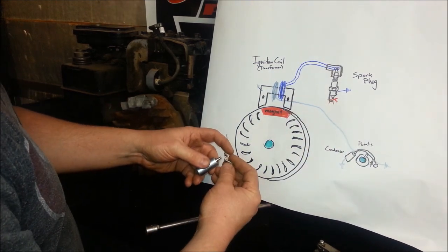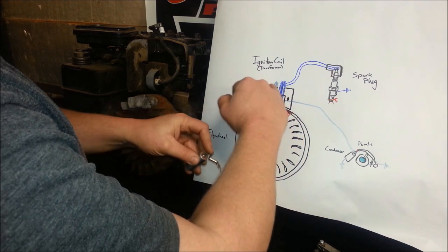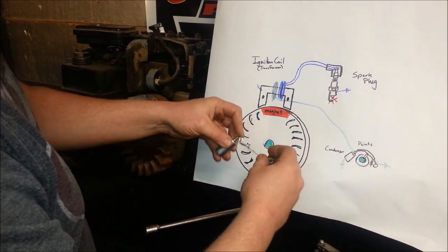So now, when I say close, they're actually touching. So our points are touching. Electricity is flowing through our primary coil and out. We're making a little generator. That's it.